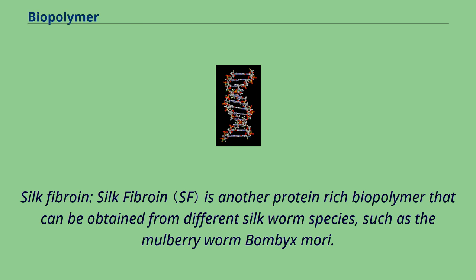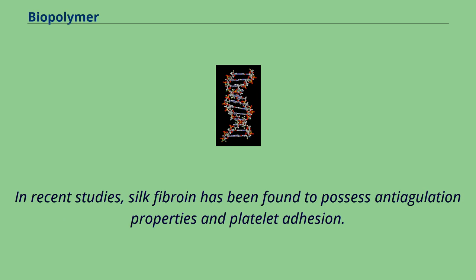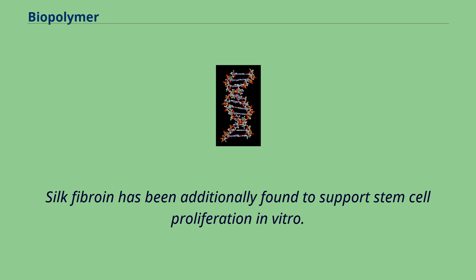Silk fibroin is another protein-rich biopolymer that can be obtained from different silkworm species, such as the mulberry worm Bombyx mori. In contrast to collagen, silk fibroin has a lower tensile strength but has strong adhesive properties due to its insoluble and fibrous protein composition. In recent studies, silk fibroin has been found to possess anti-coagulation properties and platelet adhesion, and has additionally been found to support stem cell proliferation in vitro.